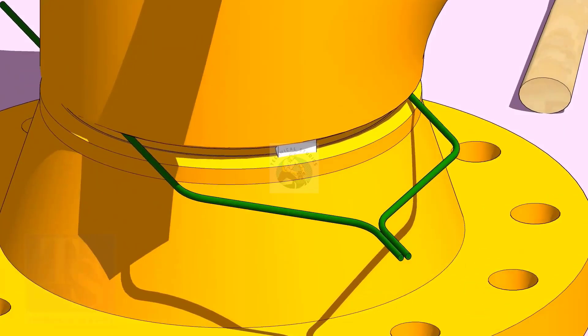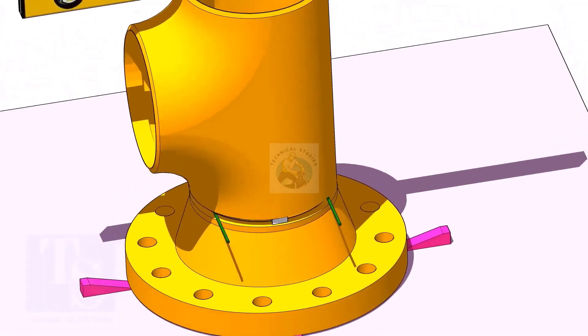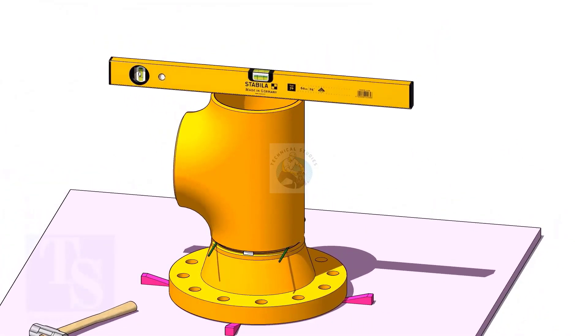Check the top level and tack weld. The sequence of the tack welding shall be 0 to 180 degree and 90 to 270 degree.